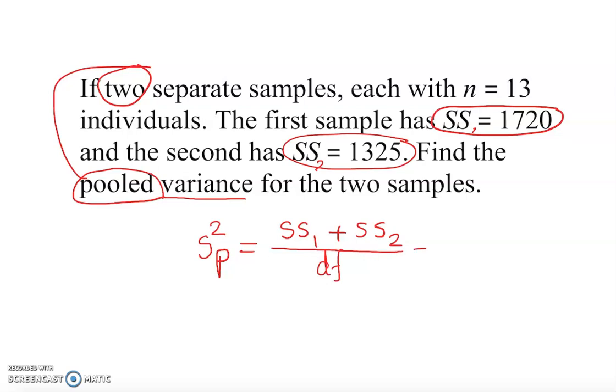So let's actually plug this in. Whatever is given, we just plug in here. So SS1, if you look here, this is going to be SS1. And of course, this is going to be SS2. So SS1 is 1720 plus 1325 over degree of freedom.